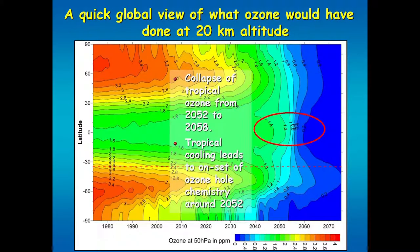Over the equator, something quite interesting happens. Ozone stays between about 1.4 and 1.6 parts per million and then suddenly decreases almost to zero. The reason for that collapse of tropical ozone just after the middle of the century is that the chemistry responsible for the Antarctic ozone hole now starts to come into play in the tropics. You get this heterogeneous chemistry that was depleting ozone in the Antarctic now depleting ozone in the tropics — it gets cold enough for that to happen.